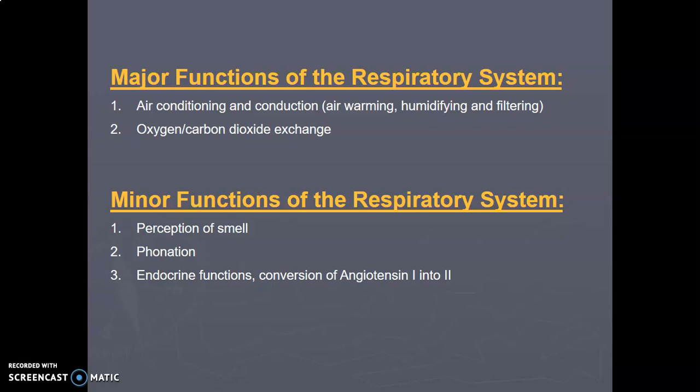The respiratory system also helps with the perception of smell. The roof of the nasal cavity contains olfactory nerves. There is phonation from the larynx. From the larynx, you get to the trachea before you get to the bronchi. Then there's the endocrine function, because of angiotensin converting enzyme that's produced in the lung — it helps to convert angiotensin 1 to angiotensin 2.